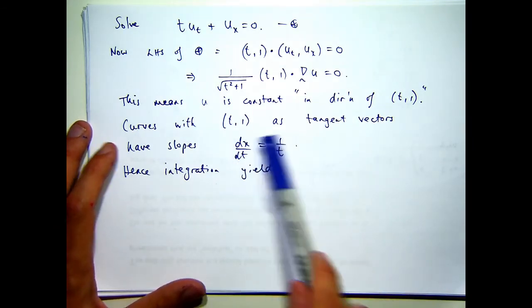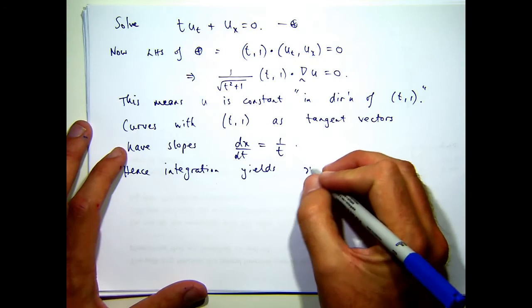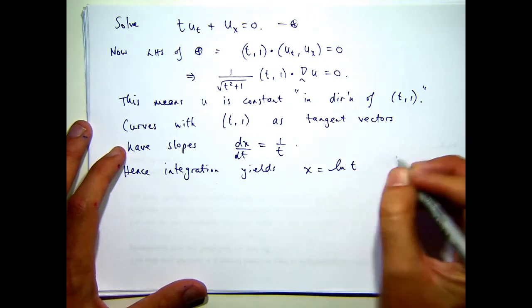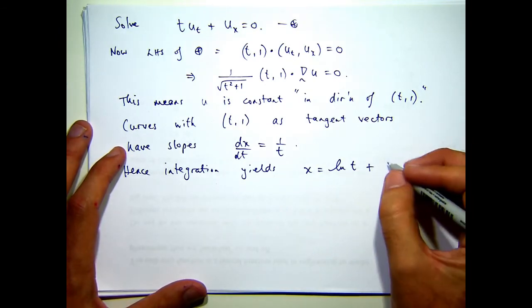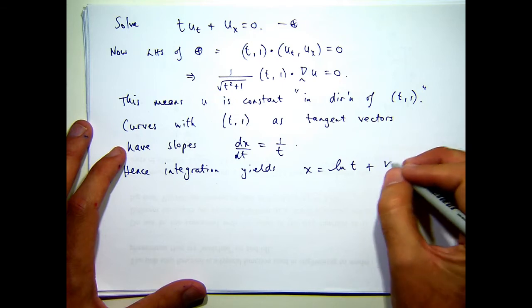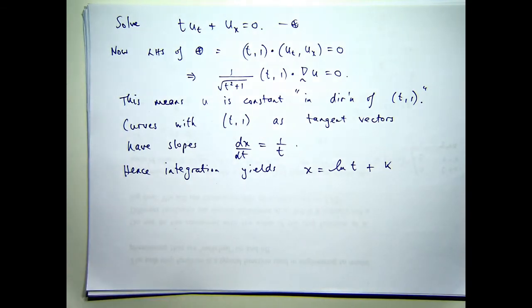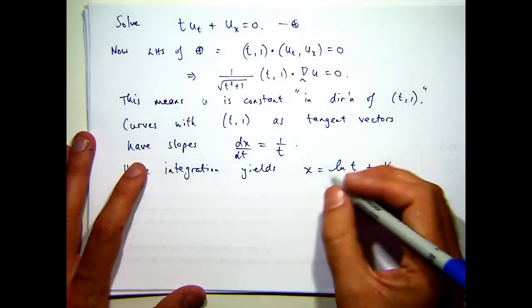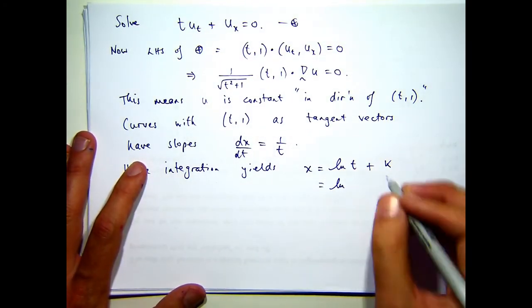So if I solve this, it's a very simple ODE. I'll get log T plus, say, K, where K is a constant of integration. So I'm just considering T positive here. I'm not worried about T negative. Okay, well, if I rearrange this a little bit, then I can simplify.